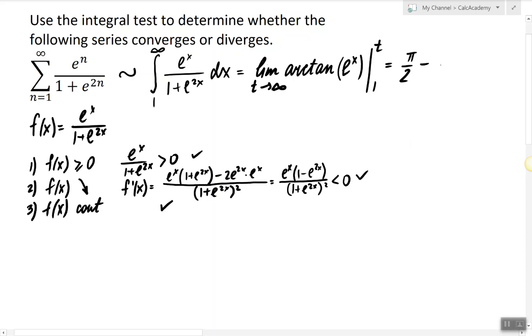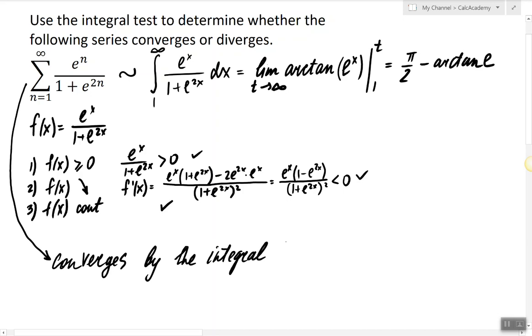So we have pi over 2 minus arctangent of e. I don't know what arctangent of e is, but it's definitely a number, pi over 2 is a number, so we would say that this integral converges. Therefore, the original series also converges by the integral test.